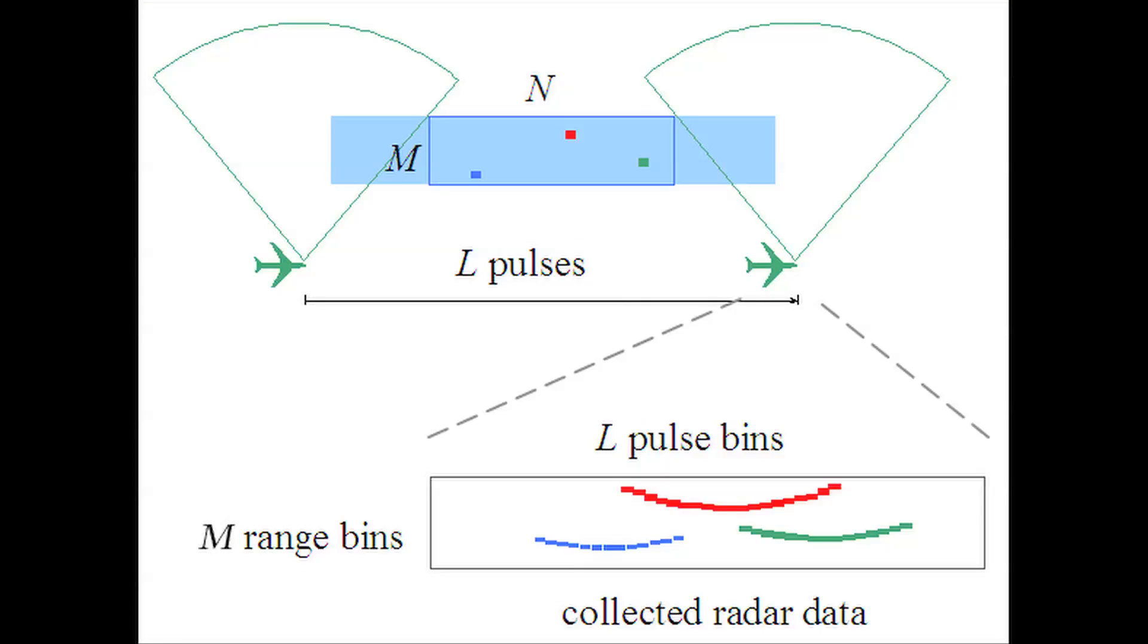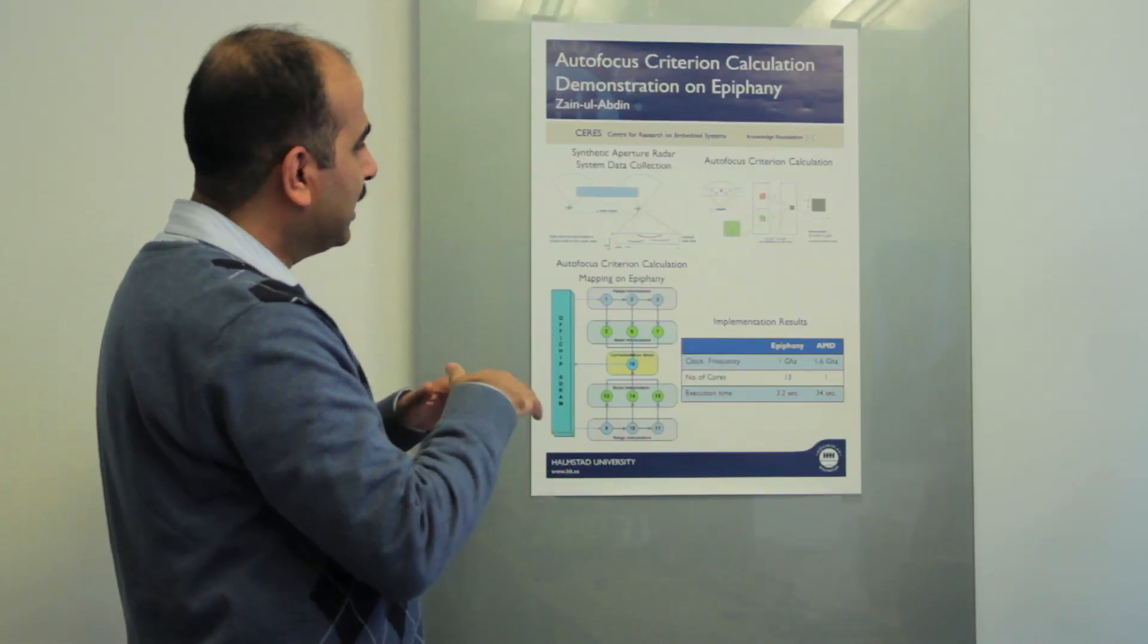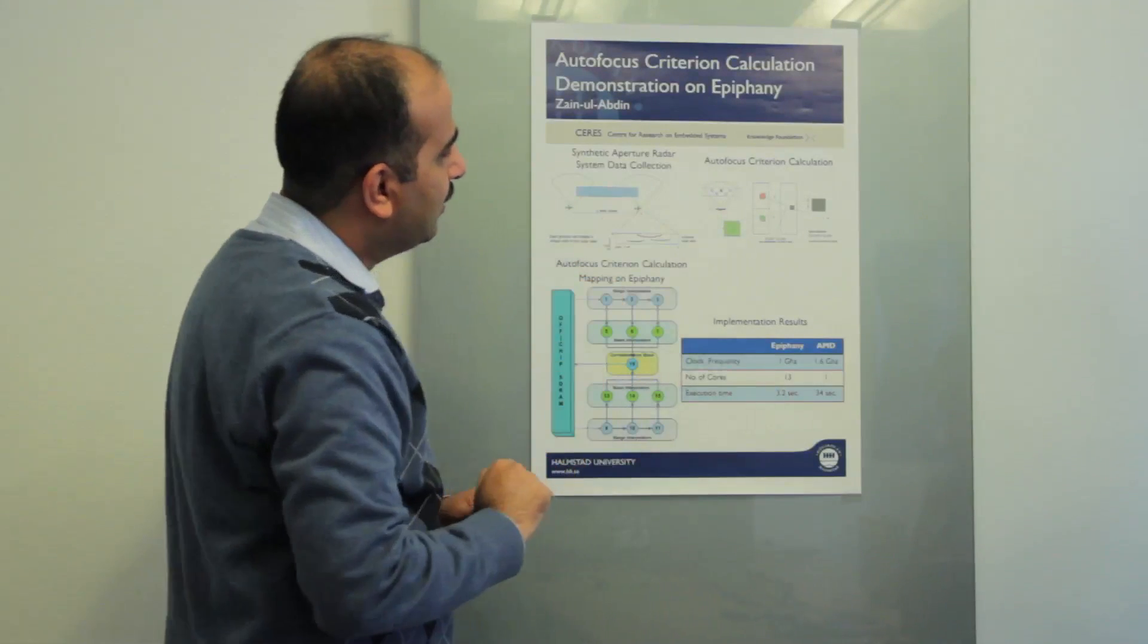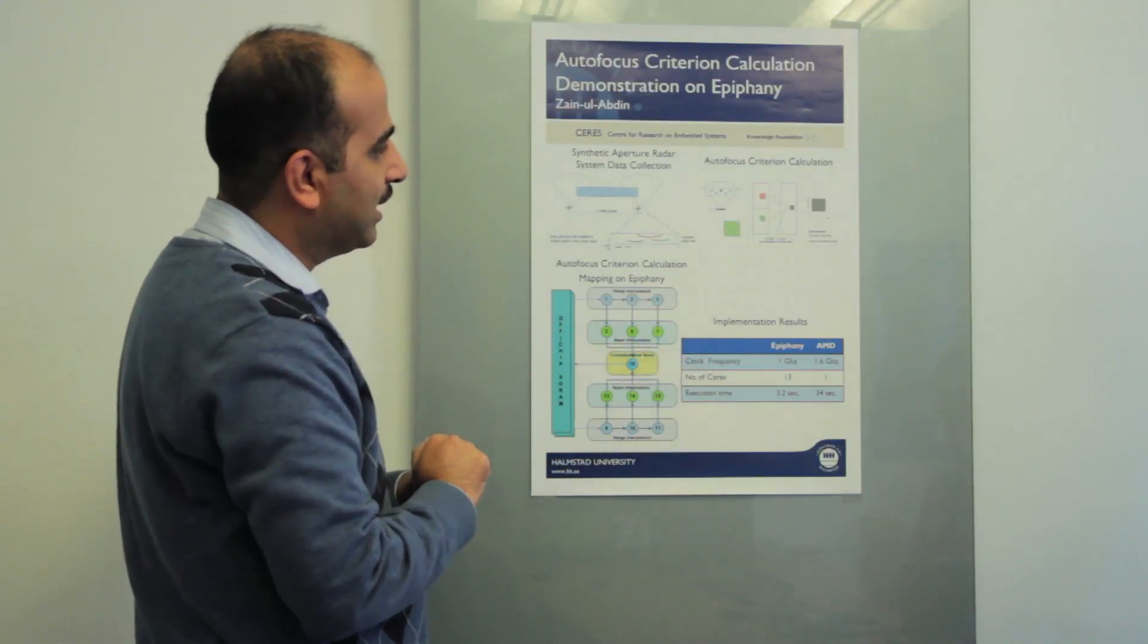But in reality, the flight path is not linear, so you get different deviations in the images that you get at the same angle.